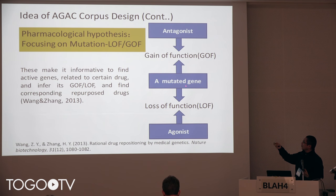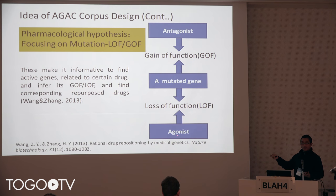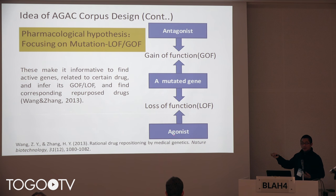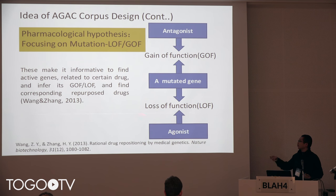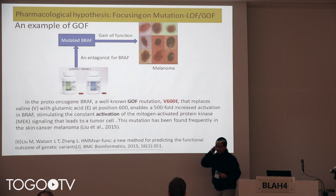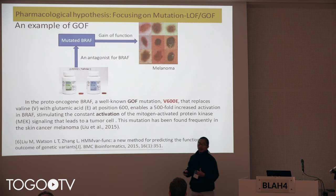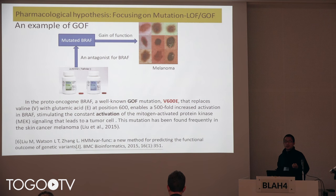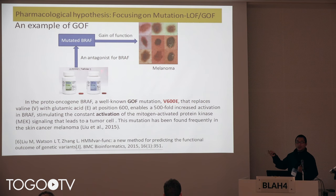Similarly, if the gene is mutated with a loss-of-function (LOF), and there is an agonist that stimulates the gene or protein to function, then this drug could have a very good reason to be a candidate to cure the disease related to this gene. For example, there is a drug called Tafenoquine, which targets the gene called BRAF. And BRAF really plays a function here.